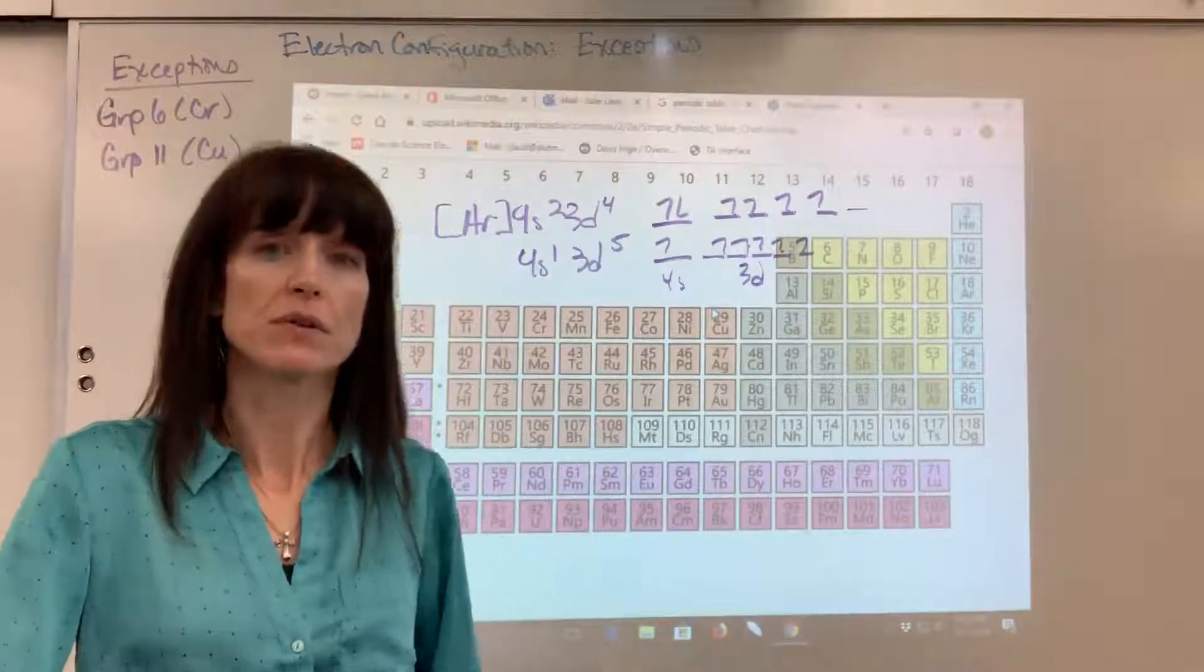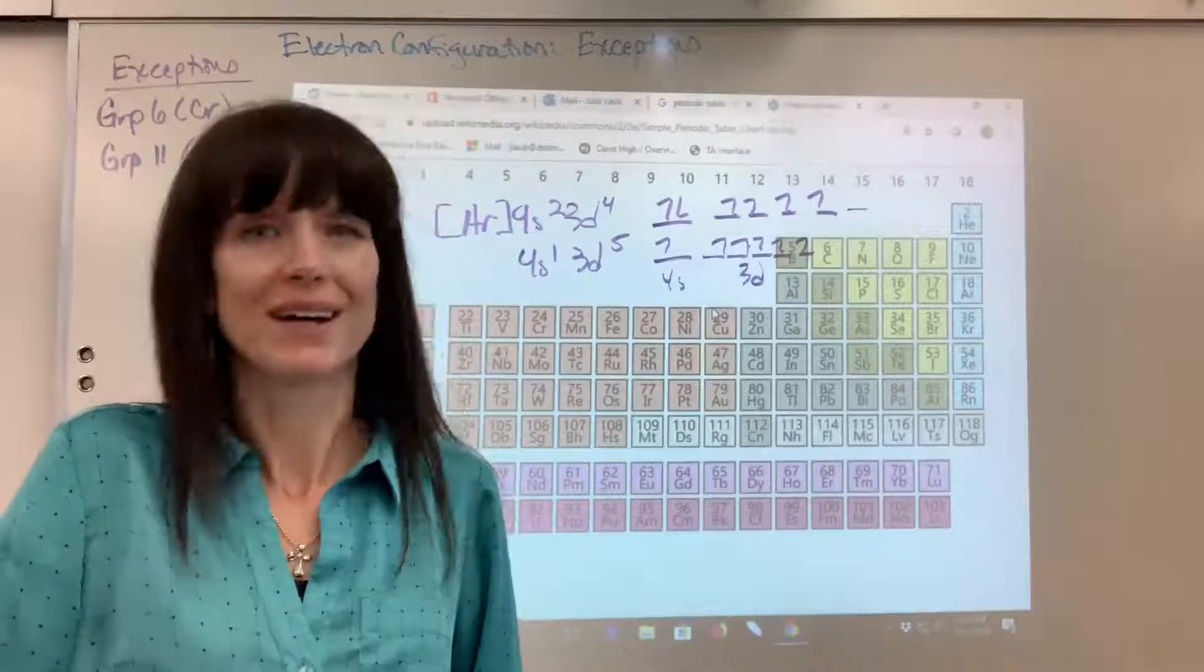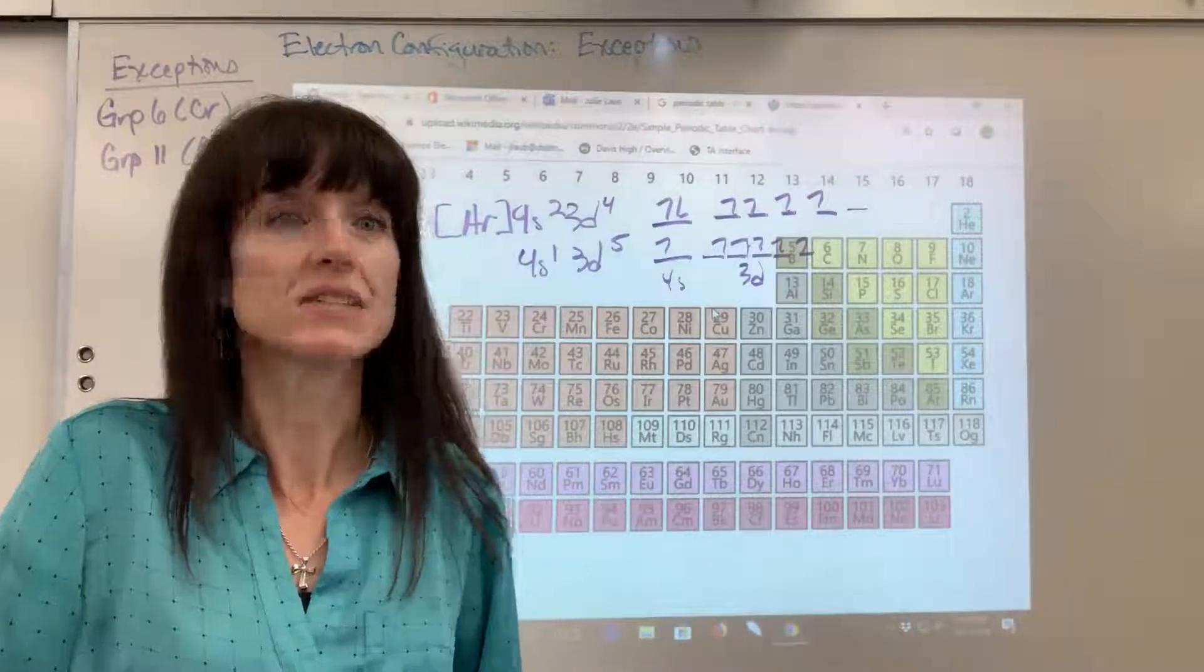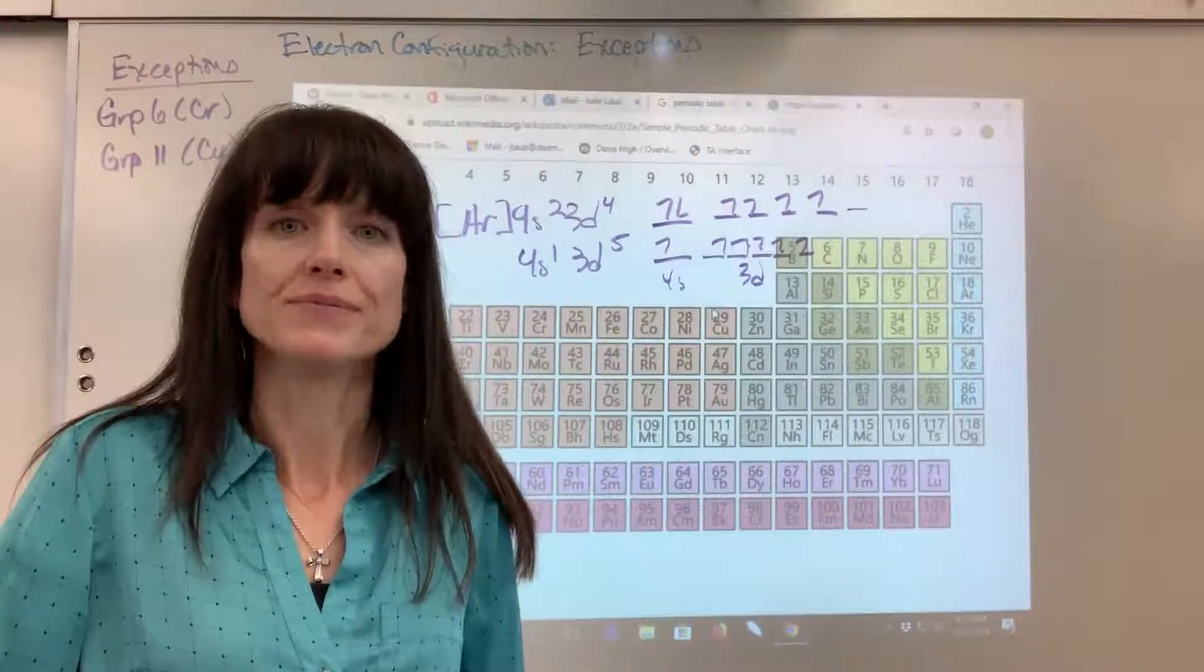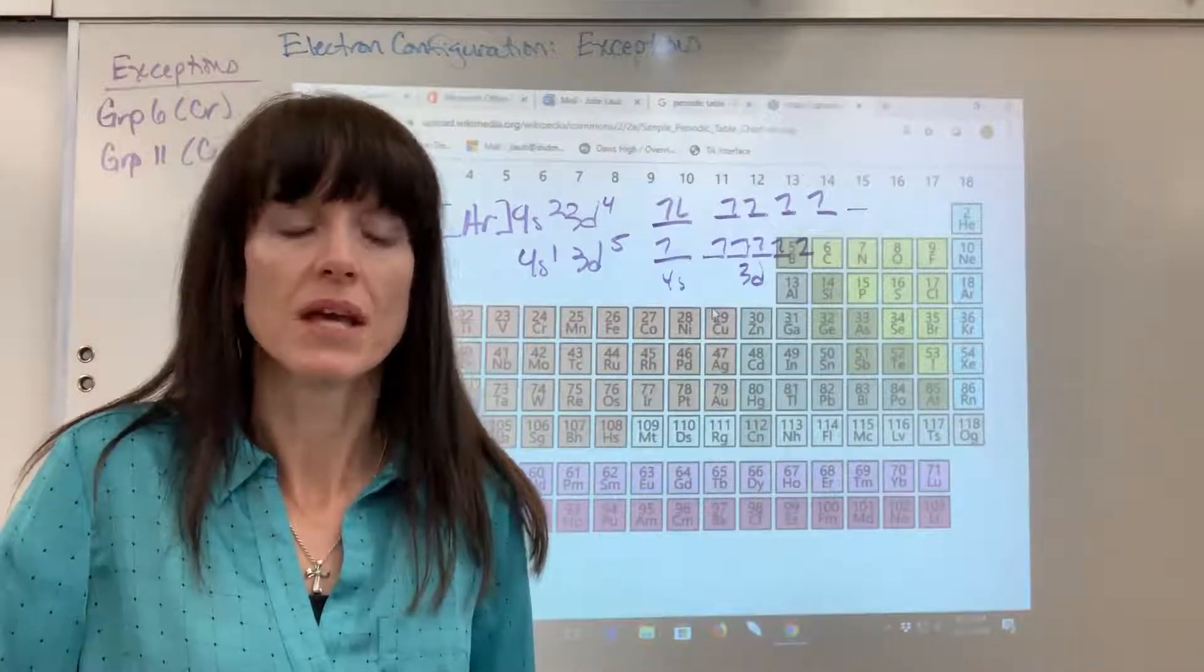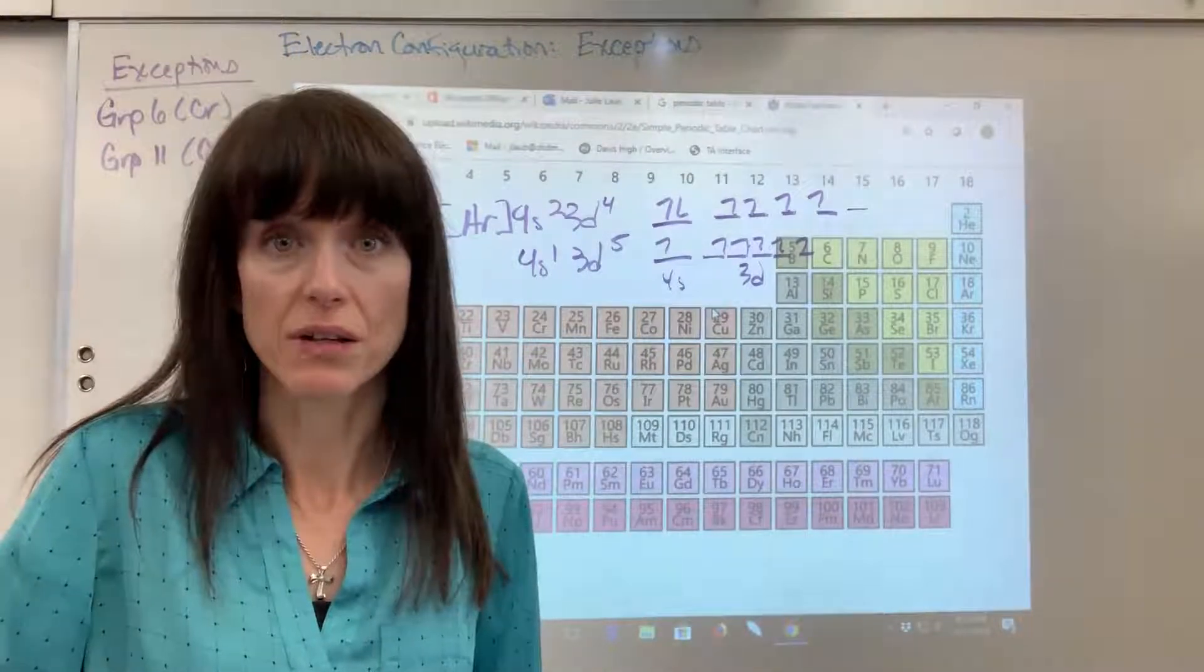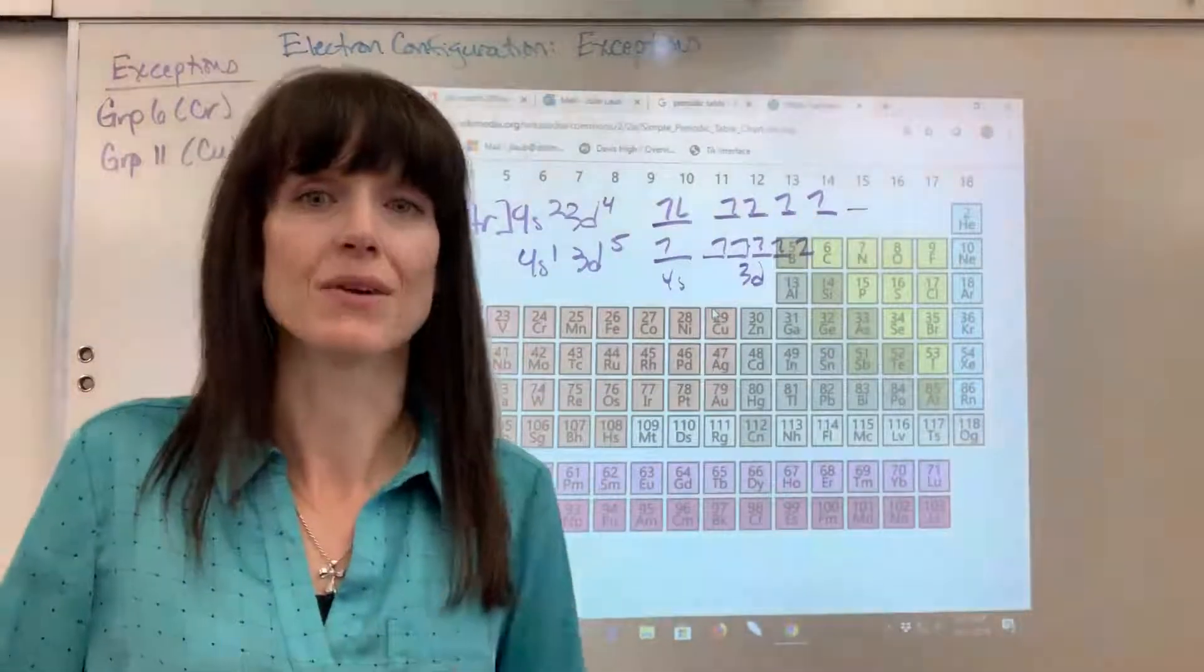Now, for those of you who are in AP chemistry, they have published that they won't ask exception questions. But I'll tell you right now, two years ago, so it was the 2018 test, there was an electron configuration on the test for one of the exception elements. And the way they graded it was students had to write it inaccurately. And if they wrote it accurately, they had to justify it, saying it was an exception.